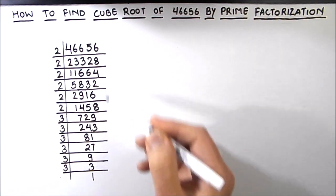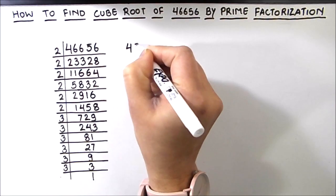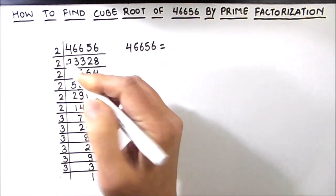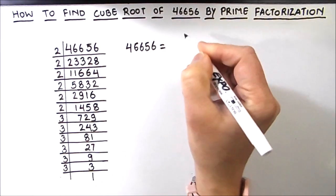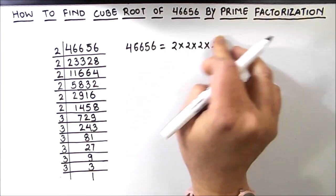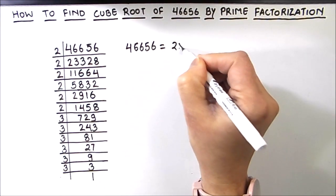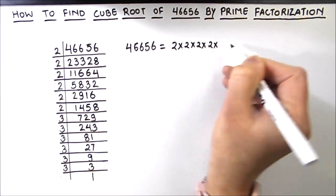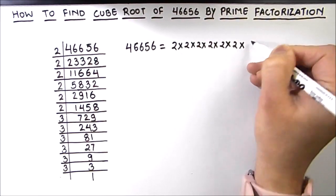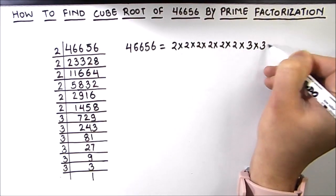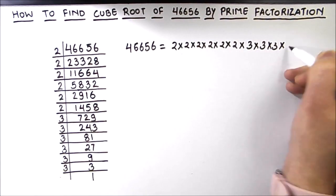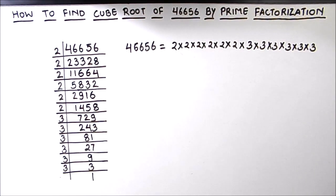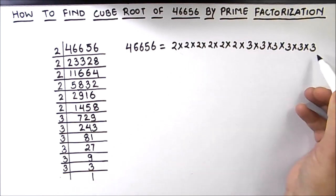The number is divided fully and we are going to write this number as the product of its prime factors. All the numbers on the left hand side are the prime factors of this number. So the number is 2 times 2 times 2 times 2 times 2 times 2, and 3 times 3 times 3 times 3 times 3 times 3 — each prime factor appearing six times.